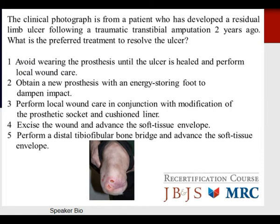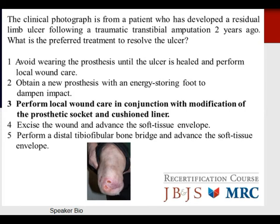Question: A patient has developed a residual limb ulcer following a traumatic trans-tibial amputation two years ago. What is the preferred treatment? Options include avoiding prosthesis use until healed, obtaining a new energy-storing foot, performing local wound care with prosthetic socket modification, excising the wound and advancing soft tissue, or performing a distal tibial-fibular bone bridge. The appropriate answer is to perform local wound care in conjunction with modification of the prosthetic socket and cushion liner, as the abnormality is likely secondary to abnormal wear from the prosthesis.